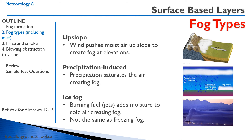Upslope fog is really the same as the stratus-type cloud, just at higher elevation. Remember we talked about orographic lift — air being blown up a surface. With upslope fog, the wind pushes the moist air up the slope. As it pushes it up the slope, it expands, then cools and condenses. This creates fog at higher elevations.